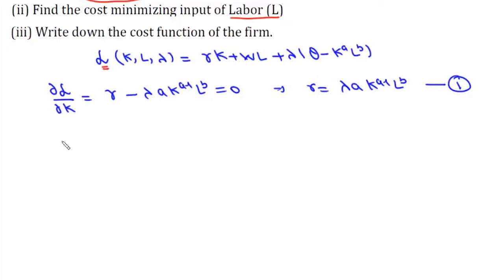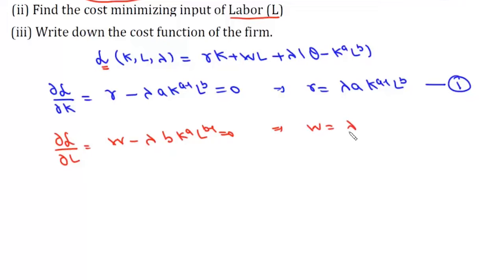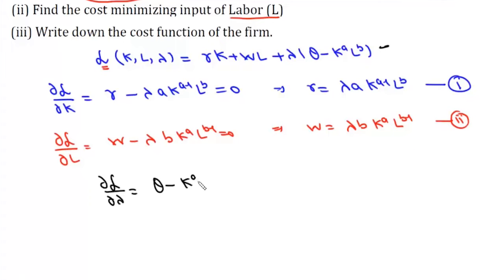Differentiating with respect to L gives del L/del L = w - lambda * b * K^a * L^(b-1) = 0, so our second equation is w = lambda * b * K^a * L^(b-1). Differentiating with respect to lambda gives del L/del lambda = q - K^a * L^b = 0, which is simply the constraint equation q = K^a * L^b, our third equation.